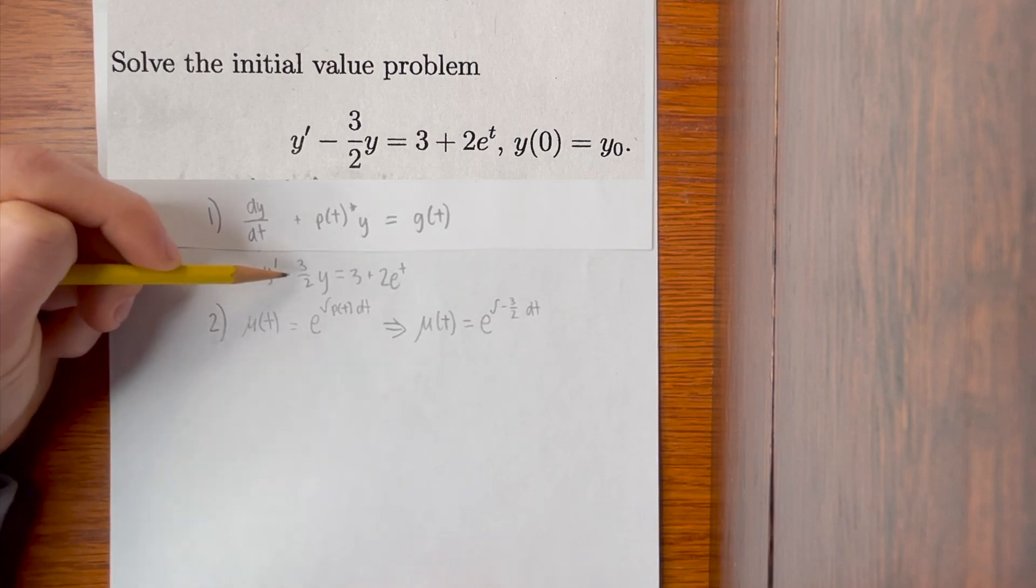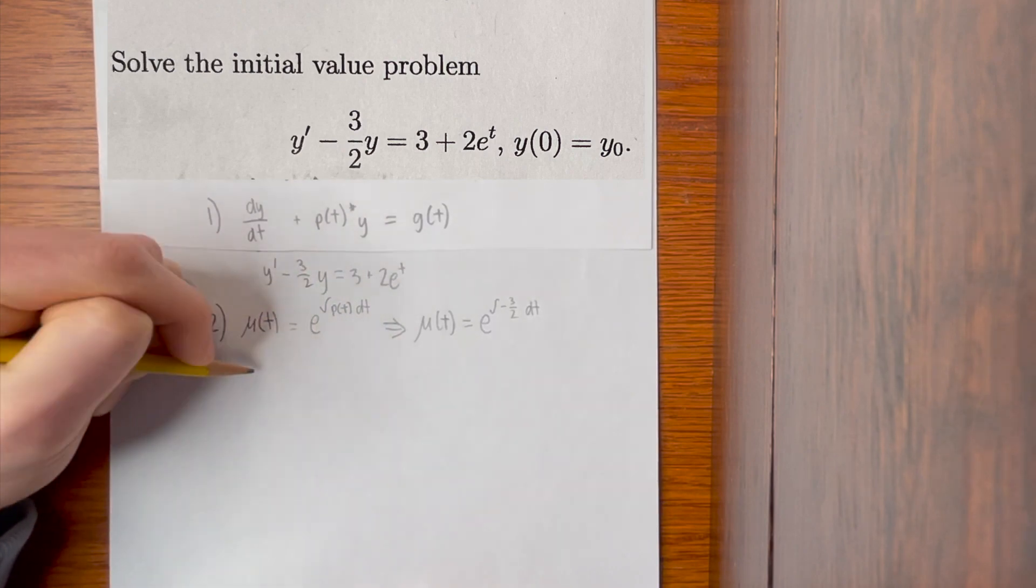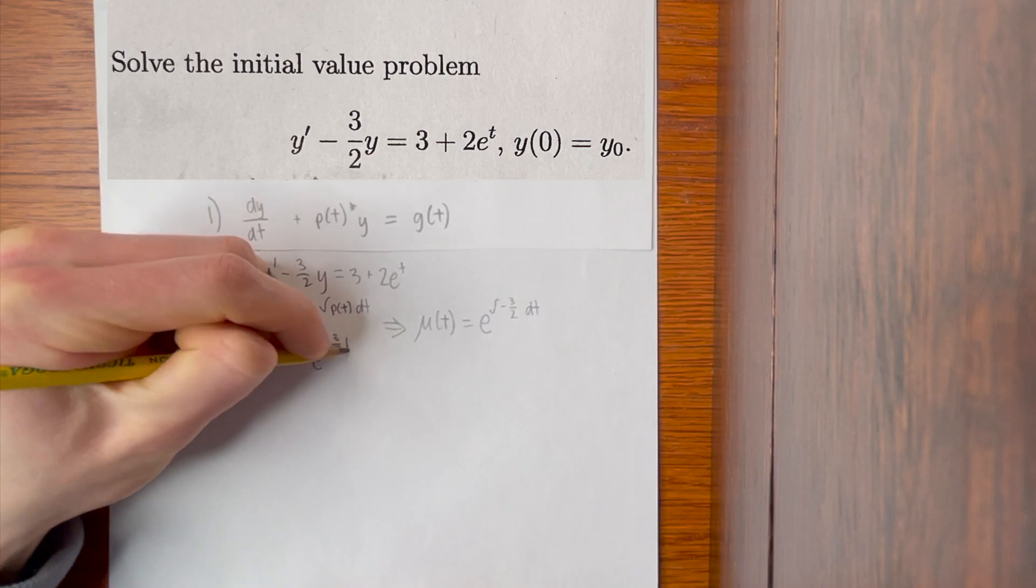We have to be careful to include the negative because the standard form has a plus, so therefore p(t) holds the negative. Substituting this in, we get μ(t) is equal to e^(-3/2 t).